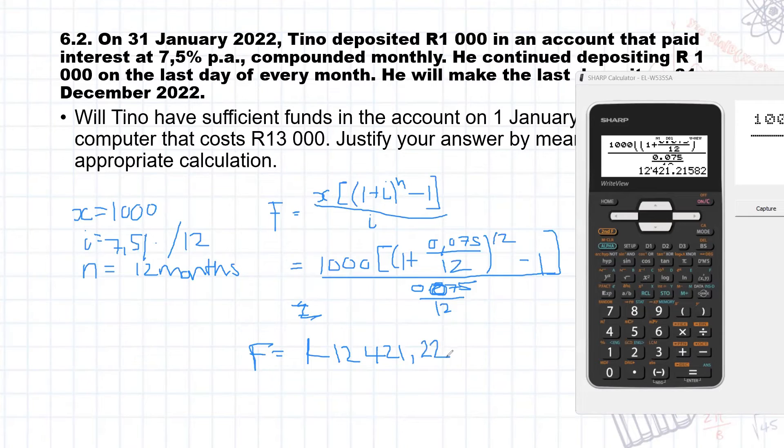Now have we answered the question? The question is actually saying will he have sufficient funds in the account to buy something that costs R13,000, but he only has R12,421 in the account? So no, that is your final mark. Make sure that you actually answer what the question is asking.